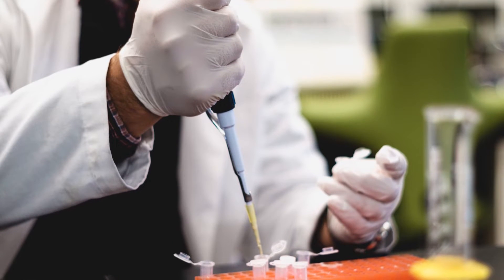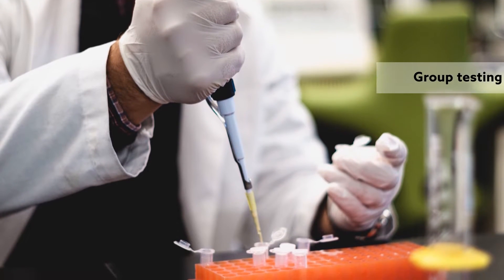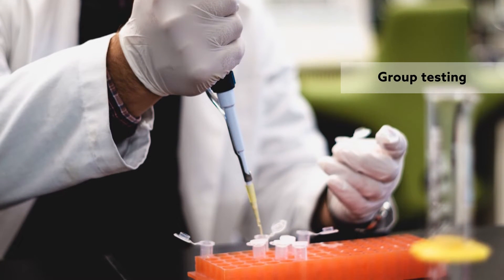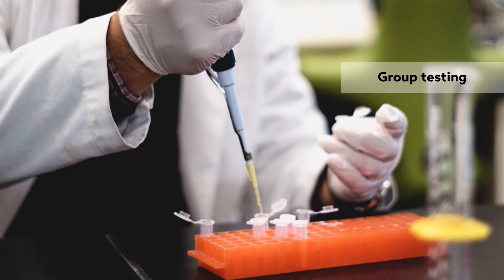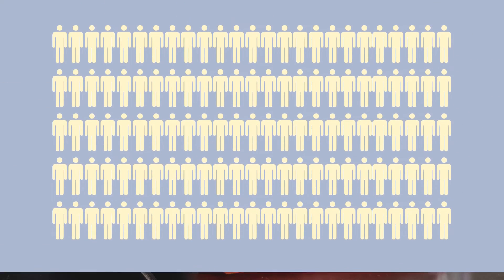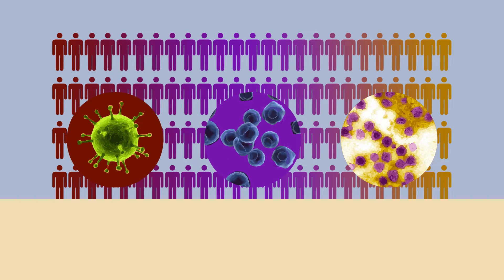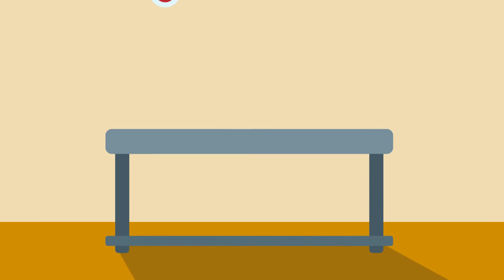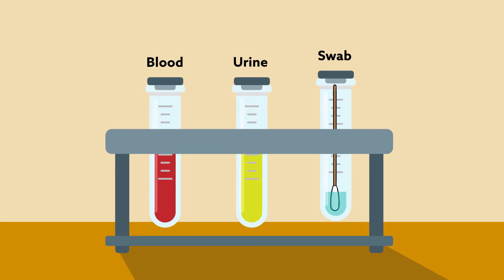Diagnostic laboratories have long used a simple tool called group testing, also known as pooling or pooled testing, to quickly screen populations for certain low-prevalence infectious diseases. Group testing pools biological specimens from many people so that an entire group can be tested at once.